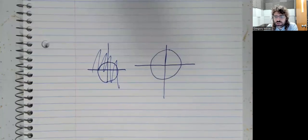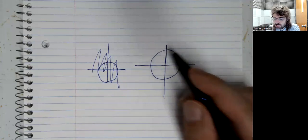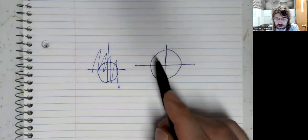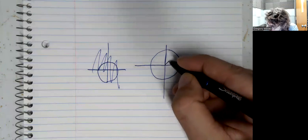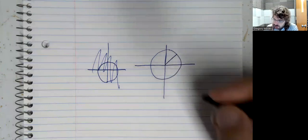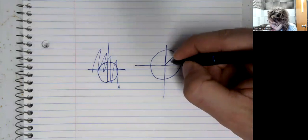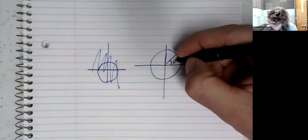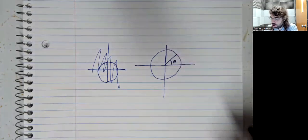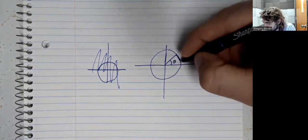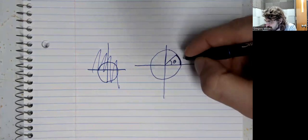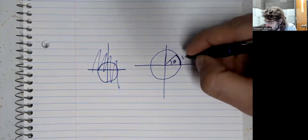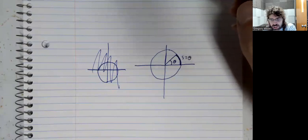When we defined the radian, we were looking at a unit circle. So the radius of this circle is one. And we defined the radian so that the angle measured in radians and this arc-length would be the same.